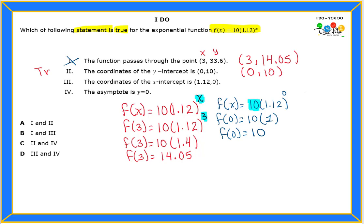What about the third one? It says the coordinates of the x-intercept is (1.12, 0). We can do exactly what we just did. x will be replaced with 1.12. So I'm gonna replace my x with 1.12. If you have 1.12 raised to the 1.12 power, we get 1.14. And if you multiply 10 times 1.14, we get approximately 11.40.